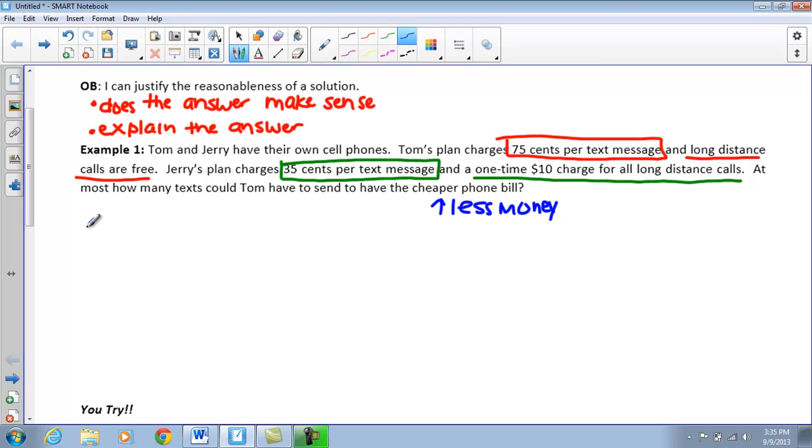First thing I'm going to do is say that x equals my number of texts. Then I'm going to set up my inequality for the information given. If I take a look first at Tom, it says that Tom pays $0.75 per text. Remember that per means multiplication.